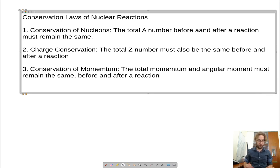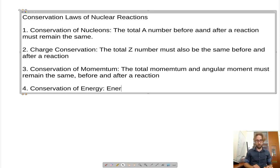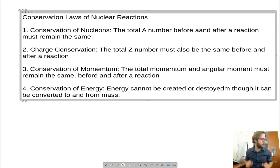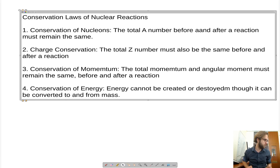And finally, conservation law number four: the trusty old conservation of energy. We're going to take a more relativistic view of this, which is that energy cannot be created or destroyed, though it can be converted to and from mass. The total energy in the system, including the rest mass energy of a nuclide or material, must remain the same, but you can convert between mass and energy in certain situations.